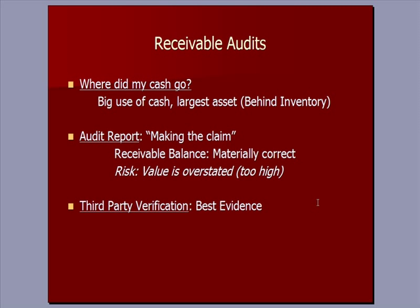We're talking first about audits of receivables. This gets back to the phrase we use in Auditing Six: where did my cash go? If somebody invests fifty thousand dollars in their Hallmark store and six months later they look at their balance sheet and notice their cash balance is much lower, the question is where did my cash go? The two biggest places cash goes, particularly for a retailer, are inventory and receivables.